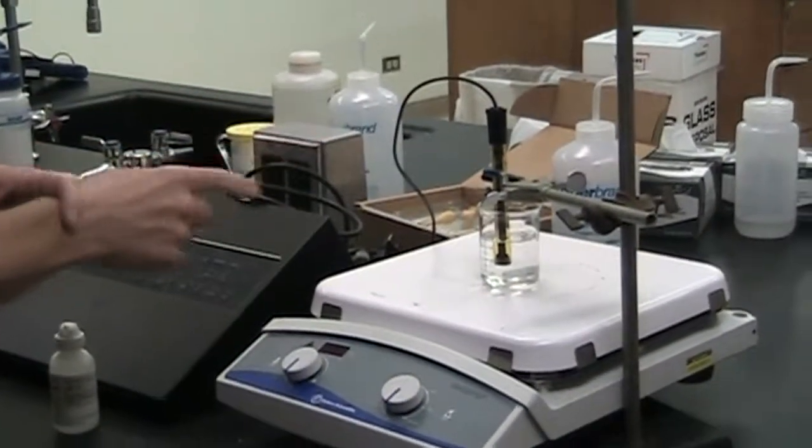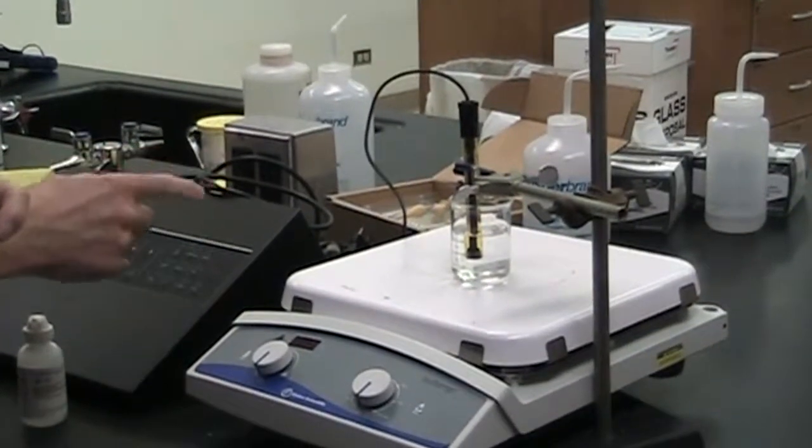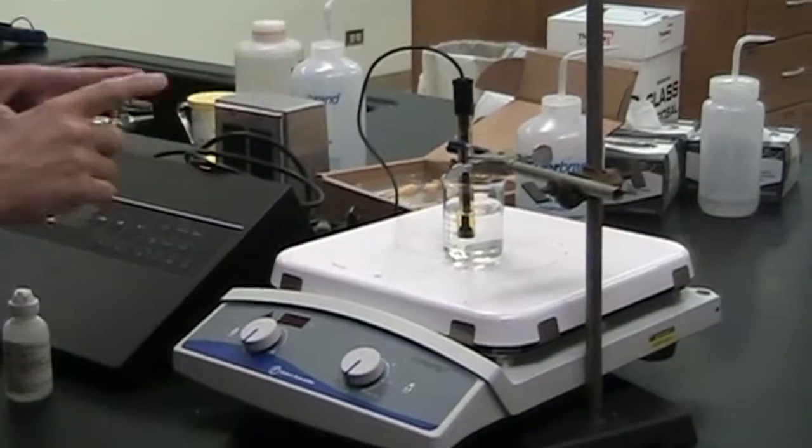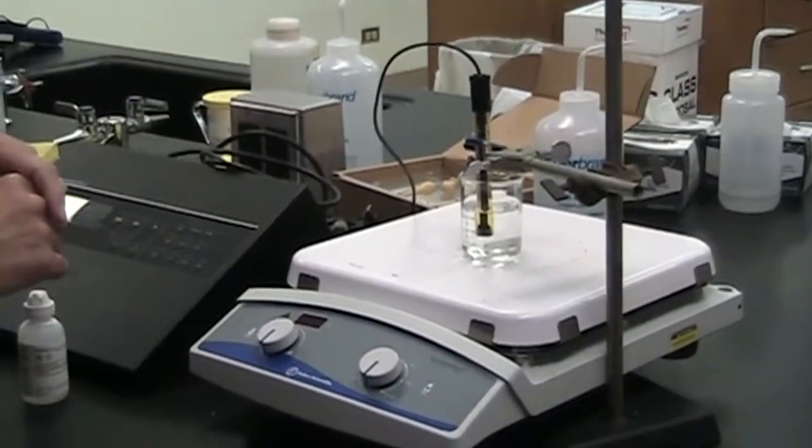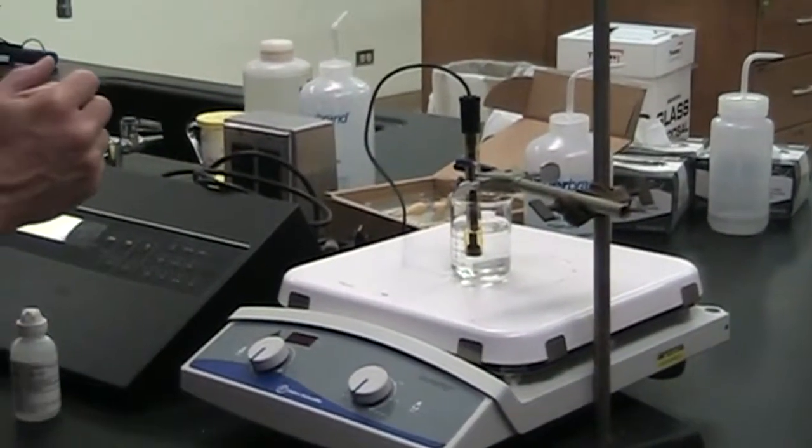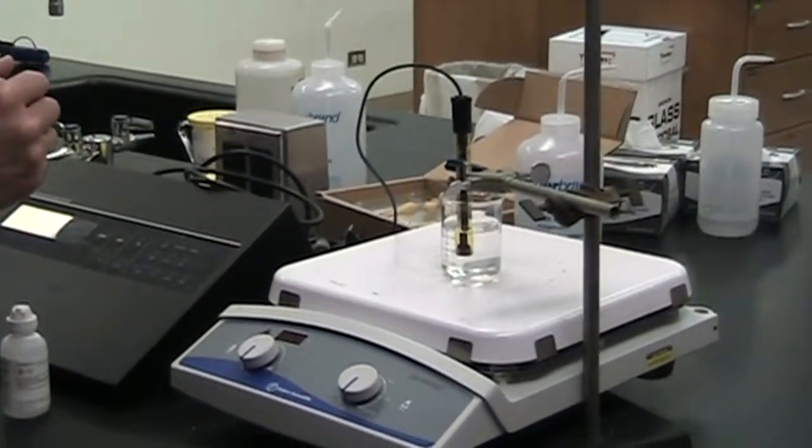All right, so this is our fluoride ion-selective electrode setup. This is a combination electrode, so the reference and the analytical electrode are all in one, so we just have the one body. That's kind of what most people are used to because most pH electrodes will be like that as well.